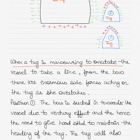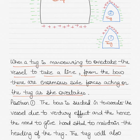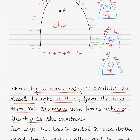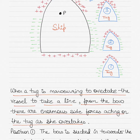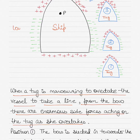When a tug is maneuvering to overtake the vessel to take a line from the bow, there are enormous side forces acting on the tug as she overtakes, as shown in the diagram. Because of the vessel's movement, water starts to pile up ahead of the vessel, creating a high pressure zone denoted by the red colored crosses. Similarly, a low pressure zone develops along the ship's side because of the fast flow of water alongside it, denoted by the green minuses.